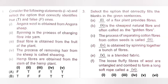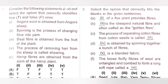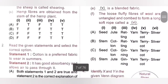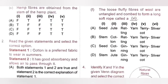D: Yarn is obtained by spinning together a bunch of fibers. E: Terricot is a blended fabric. F: The loose fluffy fibers of wool are untangled and combed to form a long soft rope called a sliver. So the answers are: 1 Stem, 2 Jute, 3 Ginning, 4 Yarn, 5 Terricot, 6 Sliver. Option D is the correct answer.